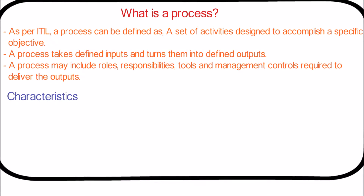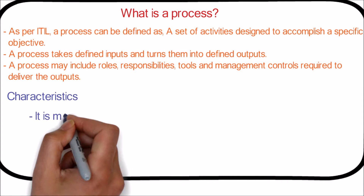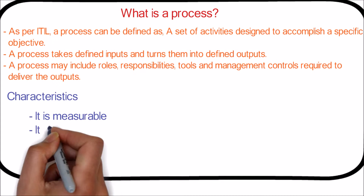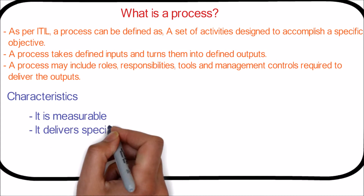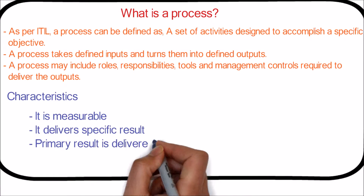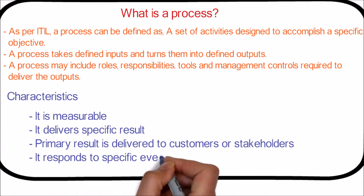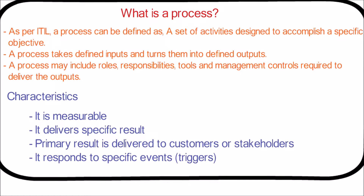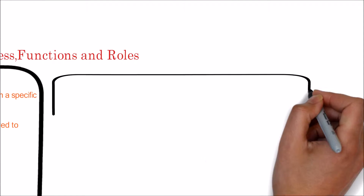The characteristics of a process are: it is measurable, it delivers a specific result, the primary result is delivered to customers or stakeholders, and it responds to specific events.